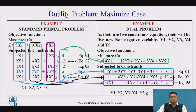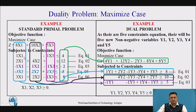Now all the converted constraint equations are written together as the standard primal problem. The newly obtained standard primal problem is: maximize z = 8x1 + 10x2 + 5x3, subjected to all the newly obtained constraints. Observing all constraints, we see that LHS is less than or equal to RHS in every case, which is according to the maximized objective function case. Now let's convert this standard primal problem to the dual.